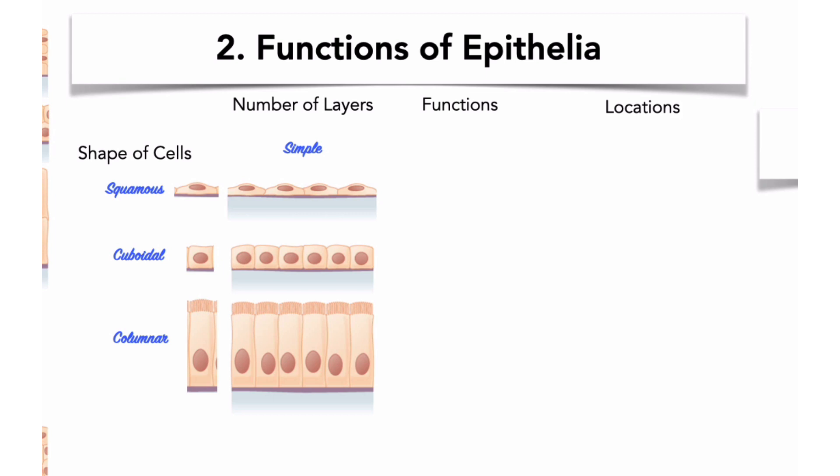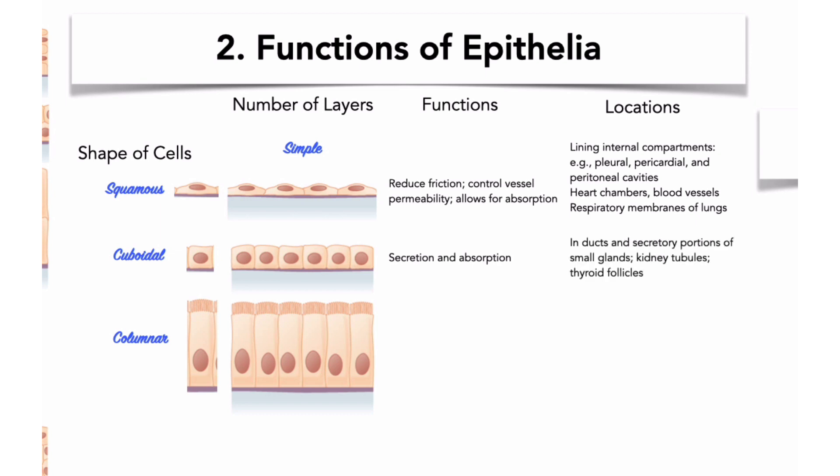First, the functions of simple epithelia. Simple squamous epithelia reduce friction, control vessel permeability, and allow for absorption. We find these lining internal compartments. Simple cuboidal epithelia are specialists in secretion and absorption. We find these in ducts, and secretory portions of small glands, kidney tubules, thyroid follicles. Simple columnar epithelia are also experts at absorption, and they secrete mucus and or enzymes depending on the cell type. We find these lining the stomach, the intestines, the gallbladder, uterine tubes, collecting ducts of kidneys, and elsewhere.